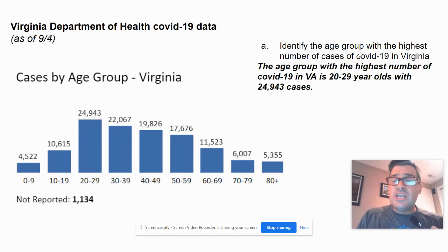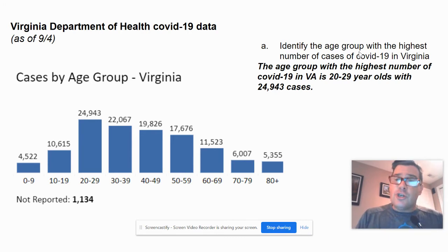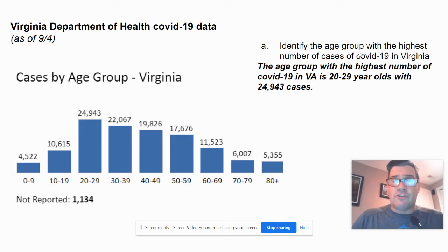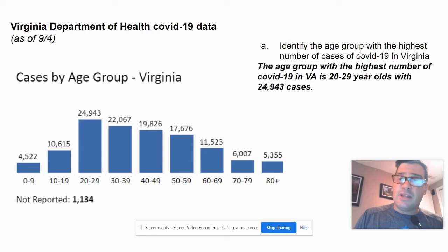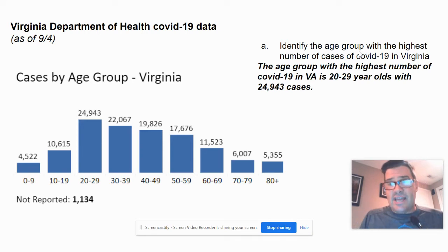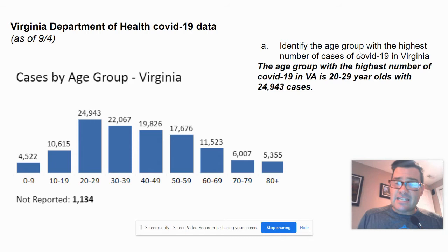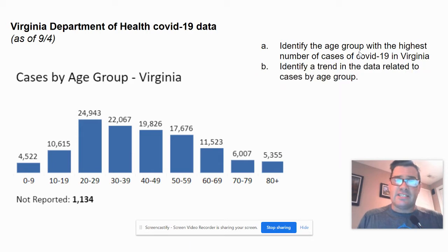Using a little bit of the wording from the question stem in your answer is a really great idea. The question asks about the age group with the highest number of cases, so I start my answer with 'the age group with the highest number of COVID cases.' That's a good technique.